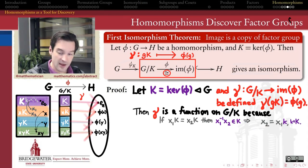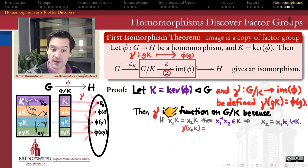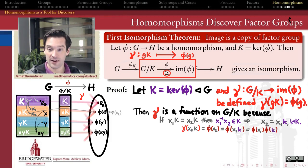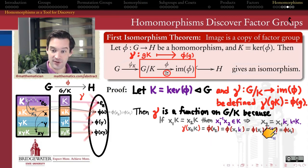And so therefore, if X2 is equal to X1 times K, then what's going to happen when I apply my function gamma to these two cosets? Gamma of X2K is going to be equal by definition of gamma to phi of X2. But on the other hand, phi of X2 is going to equal phi of X1 times K by our construction. But because phi is a homomorphism, that's equal to phi of X1 times phi of K. But remember where K lives. K lives in the kernel of phi. And therefore, phi of K is the identity element of the group H. And so this is equal to phi of X1. And running our definition backwards, phi of X1 is exactly gamma applied to the coset X1K.